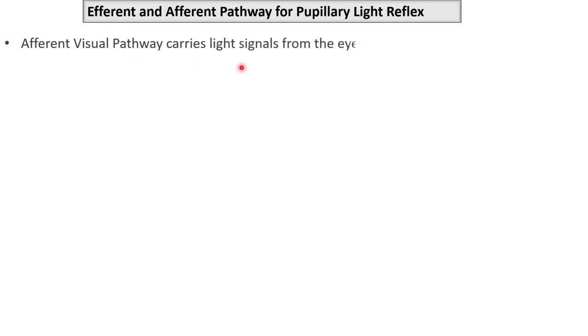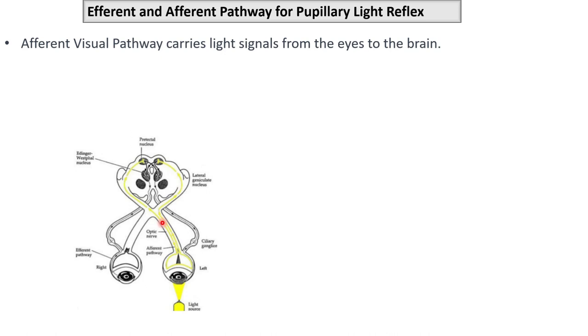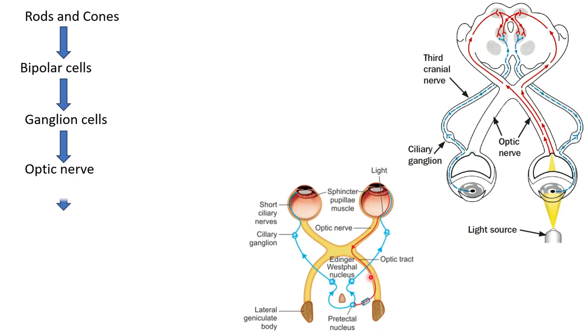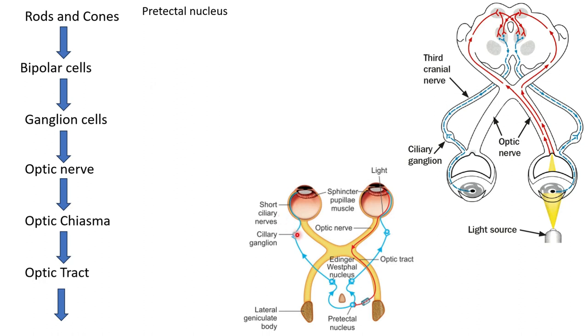The light reflex pathway has two types: the afferent visual pathway and the efferent visual pathway. The afferent visual pathway starts from the retinal rods and cones, taking information to the bipolar cells, then to the ganglion cells, then the optic nerve, which carries the information to the optic chiasm, and from the optic chiasm to the anterior two-thirds of the optic tract. In our visual pathway, visual signals go toward the lateral geniculate body, but the pupillary light reflex fibers do not — instead, they go to a different nucleus called the pre-tectal nucleus.